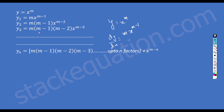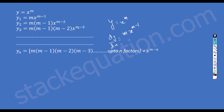It's the third derivative here, so the exponent of x is m minus 3. Similarly, for the nth derivative, it is x to the power m minus n. We subtract the same number for which we are trying to find the derivative from m. So x to the power m minus n. And what about the coefficient part? It goes on up to n factors.